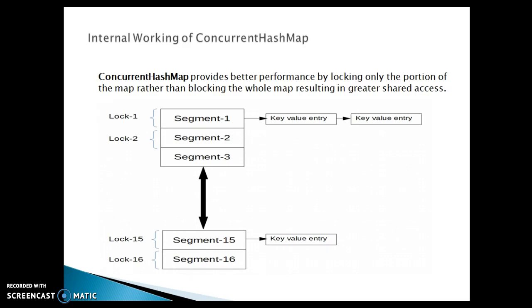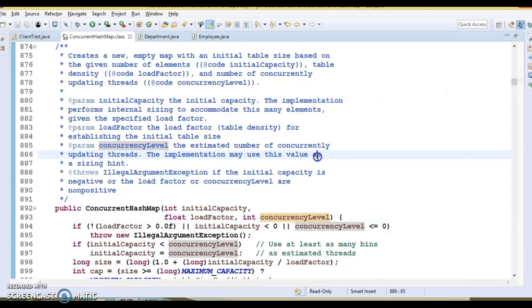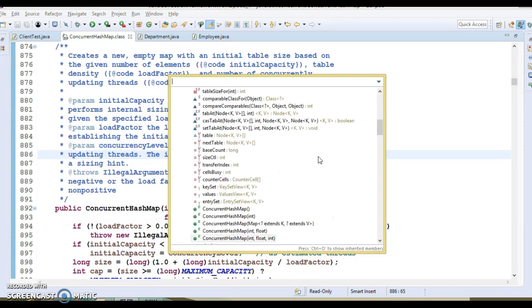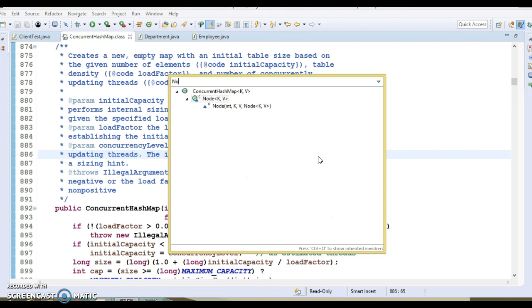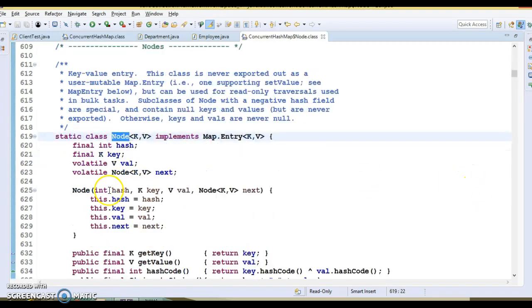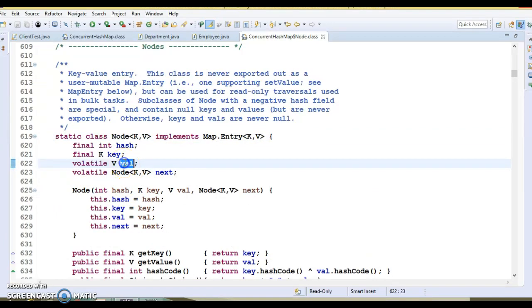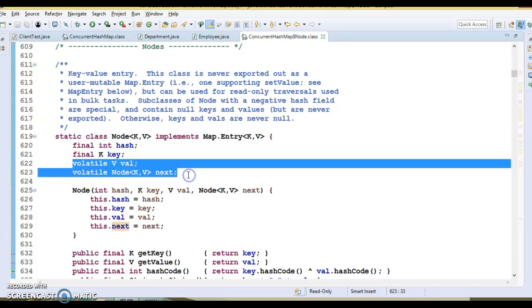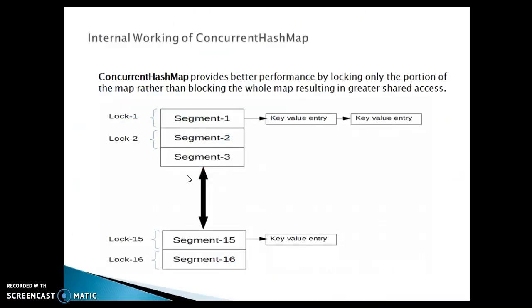Memory visibility for read operations is ensured by volatile reads. In the ConcurrentHashMap source code, the val and next fields of the Node class are declared volatile. If you look into the internal class called Node, you will see the val variable and next pointer are of type volatile. ConcurrentHashMap uses the volatile keyword to maintain references as well as values inside every segment.